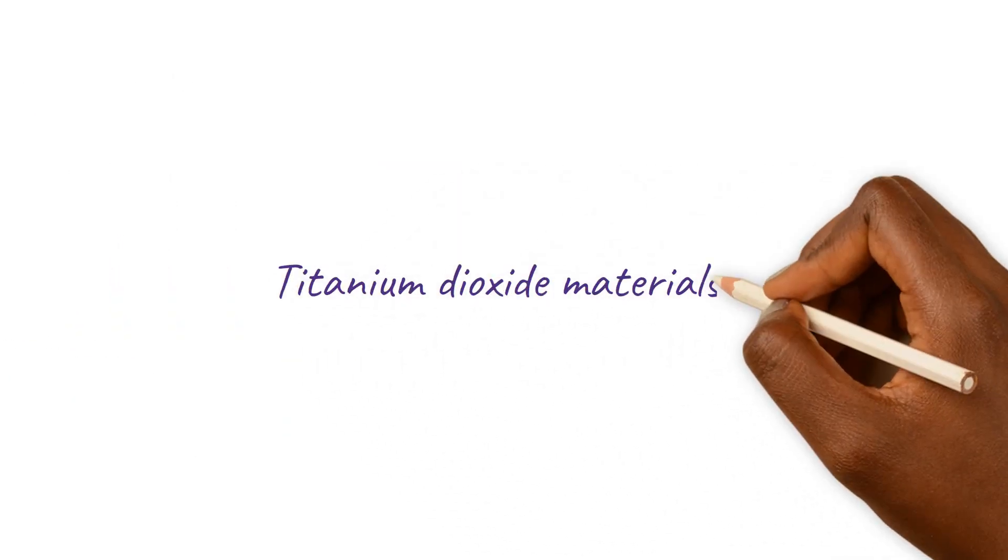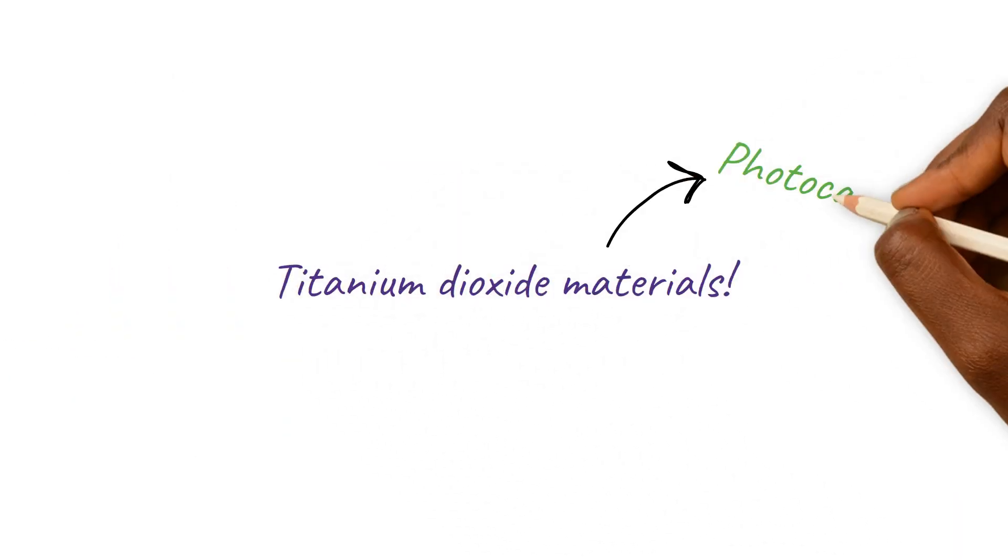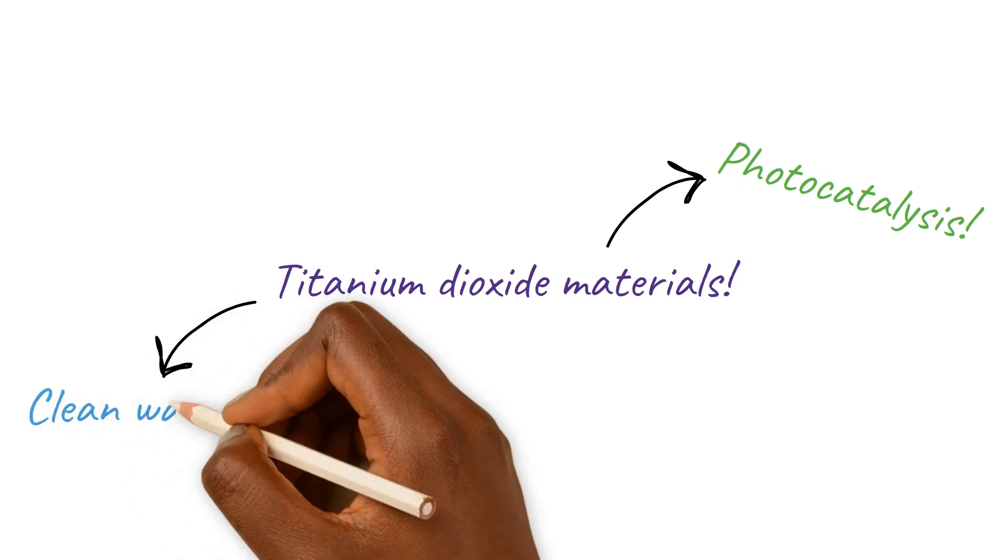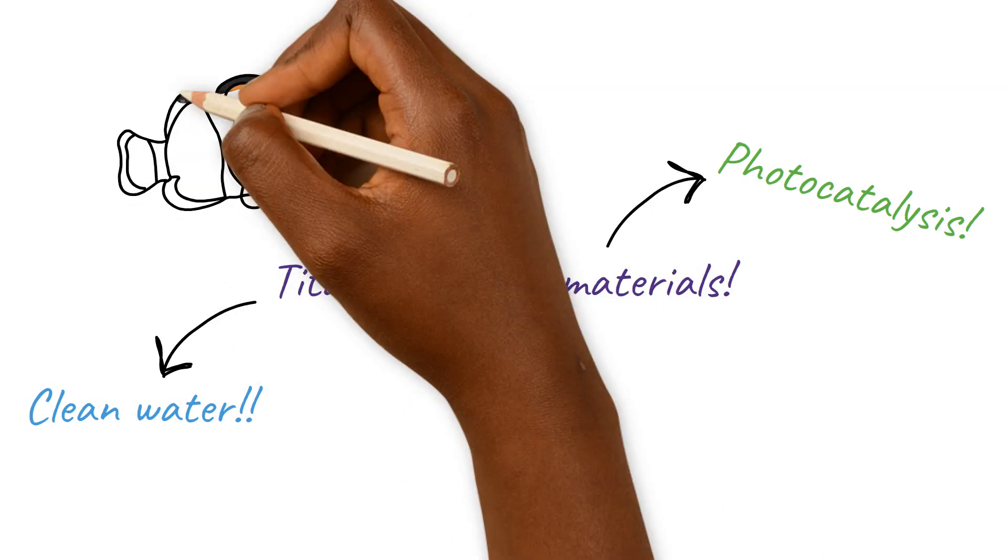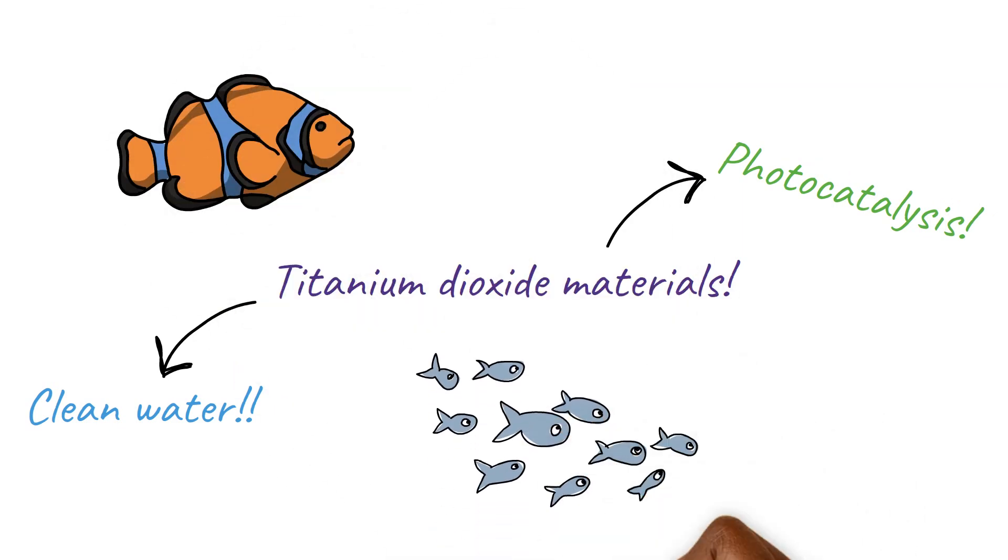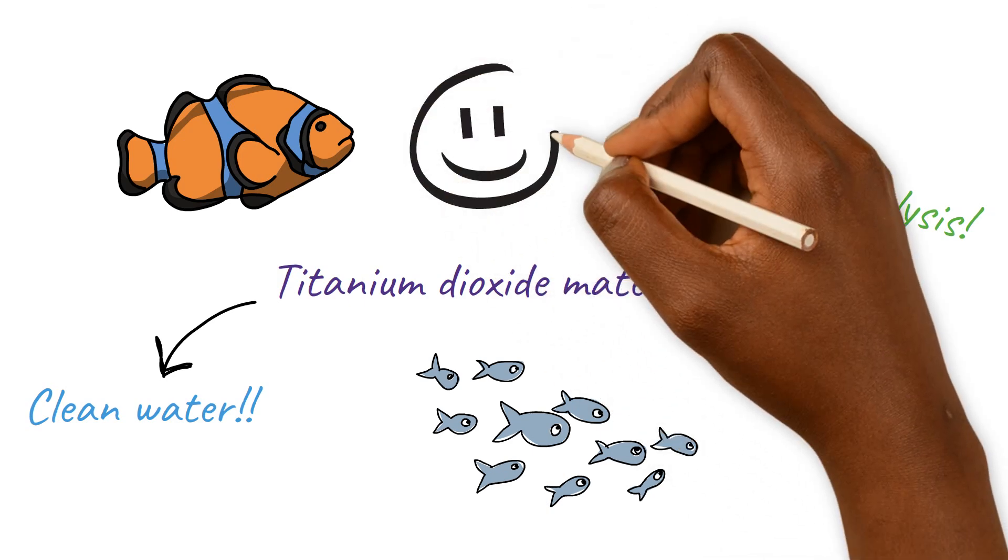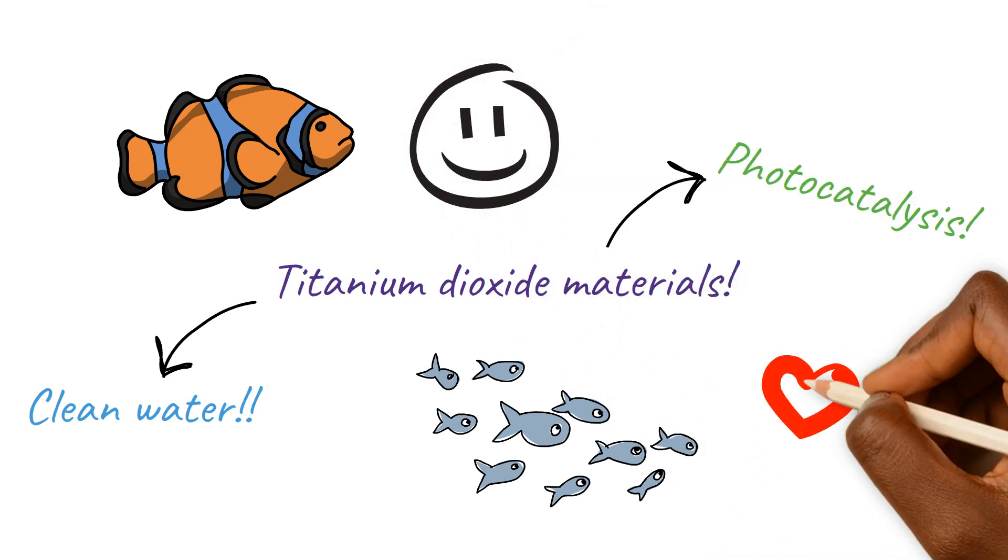All of this to say that we can use titanium dioxide materials to harness the power of photocatalysis. With some sunlight, we can remove dangerous chemicals from our contaminated water. This is great to protect us from dangerous chemicals in our drinking water, and also to protect our aquatic friends, just like Freddie and all of his friends who live in lakes and rivers.